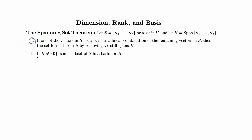In part B: if H is not the zero vector subspace — the vector space containing only the zero element — then some subset of S (not necessarily all of them, or it could be all of them) is a basis for H.